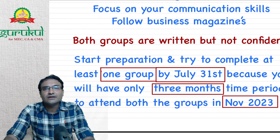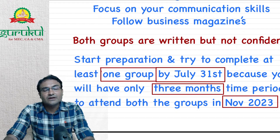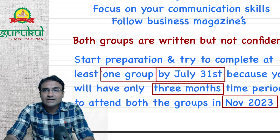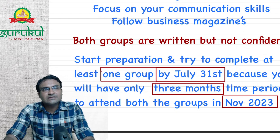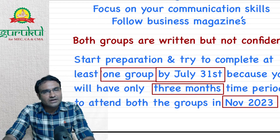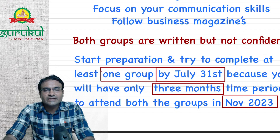Please revise your group by July 31st. June and July — two months are there, you can complete it in this period. By the time the results are declared, you will already be ready with Group 1 or Group 2 revision. When results are declared, there will be two possibilities. If results are positive, no problem — you can join your articleship.